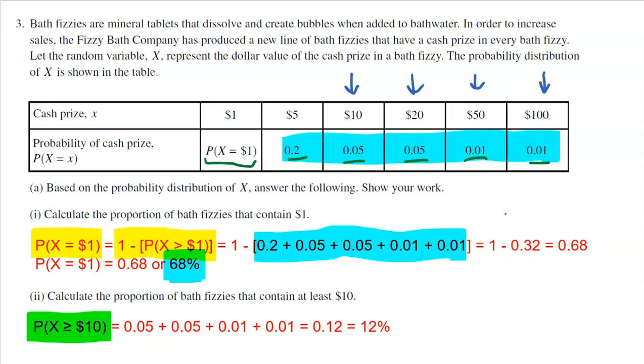That is 0.05, 0.05, 0.01, 0.01, which is 0.12, or 12%. So you got about a 12% chance of winning at least $10 in your bath fizzies. So a couple of pretty easy probability questions there, just doing some quick math. Probably don't even need a calculator for these problems if you're pretty good in your head.